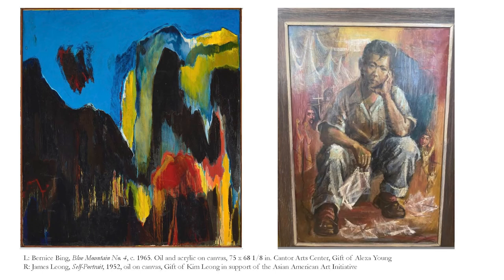For example, we were gifted this Bernice Bing work — she's an amazing painter. Her aunt was a dancer in Forbidden City; she was orphaned; she studied with Saburo Hasegawa, one of the primary Zen tutors to the Beats; and she's clearly an abstract expressionist painter studying with Clifford Still, going back and forth between being a caretaker at a vineyard and working with communities in San Francisco. This major painting was very badly damaged in a fire, and Elisa has secured grants to allow us to conserve it.